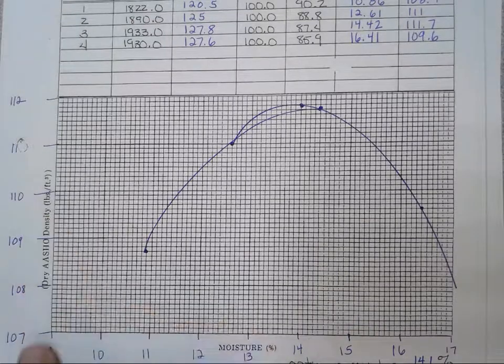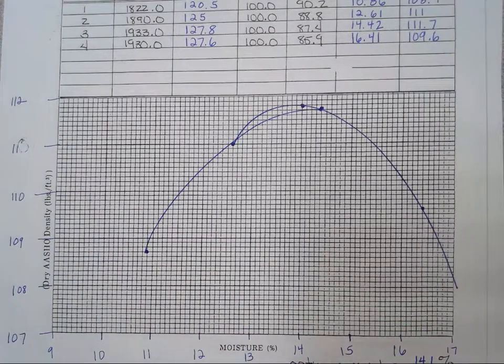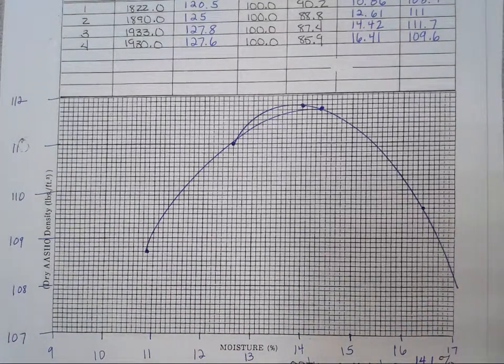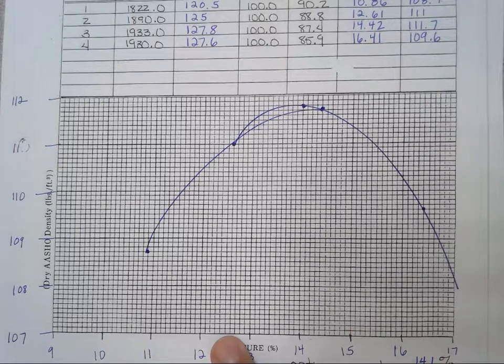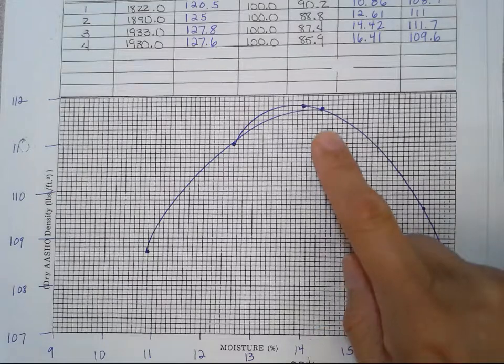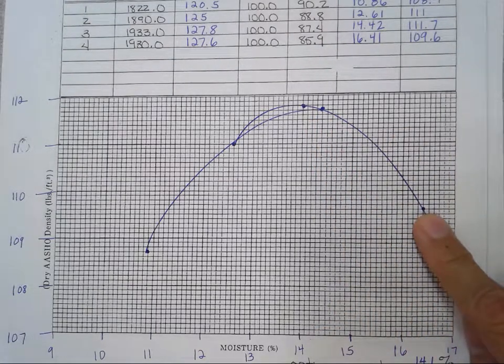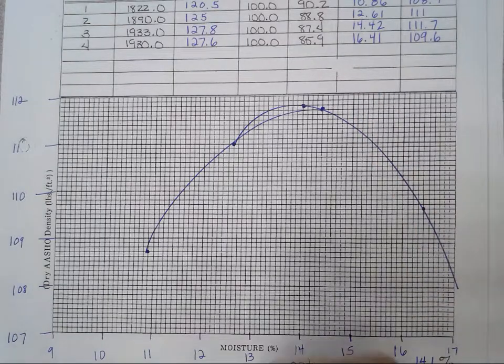and I used the scale from 9 to 17 and 107 to 112 for the dry density, you might have used, you know, slid this all down a little bit or slid it over. That's fine. It's up to you. And like I said, I will be giving you these scales on any test and final exam too, but just for the homework. And then we plot the points. So we have the 10.9 and 108.7, 12.61 and 111, 14.42 and 111.7, and 16.41 and 109.6. So those are my four points there.